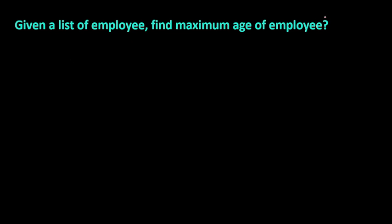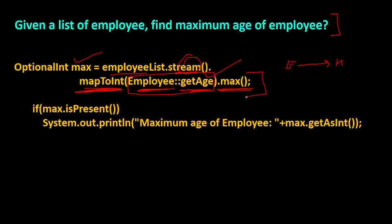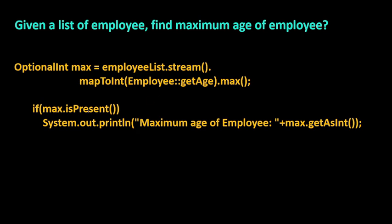Next question: given a list of employees, find the maximum age. We use employee list stream, then mapToInt with a method reference Employee::getAge to convert to an IntStream, then call max(). This returns an OptionalInt. We check isPresent() and then call getAsInt() to retrieve the actual maximum age value stored in the OptionalInt variable.